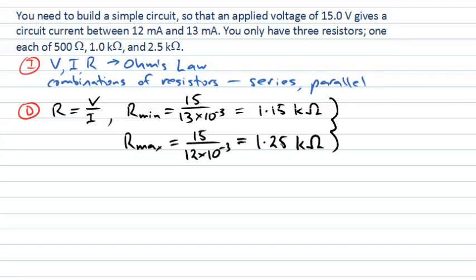We only have three resistors to choose from: a 500 ohm (half kilo ohm), a 1 kilo ohm, and a 2.5 kilo ohm. The simplest thing would be to put just one resistor in the circuit, but none of these resistors falls in the range between 1.15 and 1.25 kilo ohms, so a single resistor won't work.